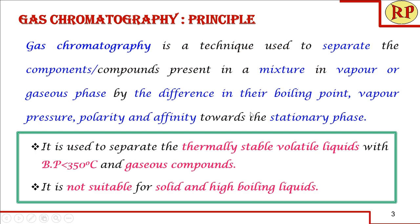First we'll understand the principle behind gas chromatography. Gas chromatography is a technique used to separate the components or compounds present in a mixture in vapor or gaseous phase by the difference in their boiling point, vapor pressure, polarity, and affinity towards the stationary phase. It is mainly used to separate thermally stable volatile liquids with a boiling point less than 350 degrees centigrade and gaseous compounds, but it is not suitable for solids and high-boiling liquids.